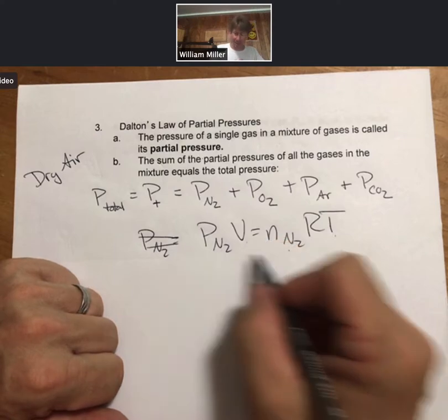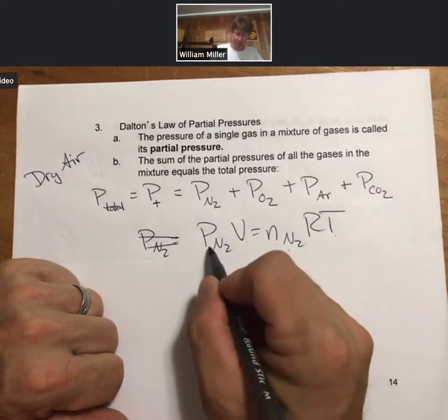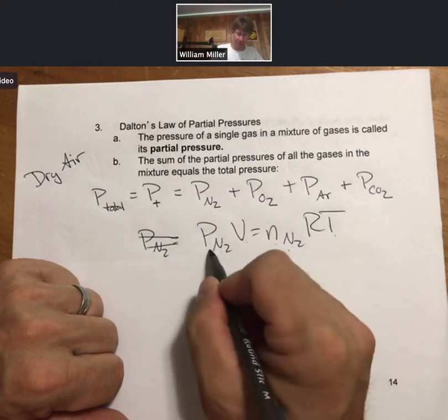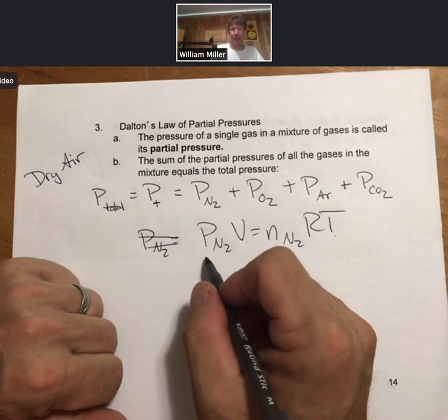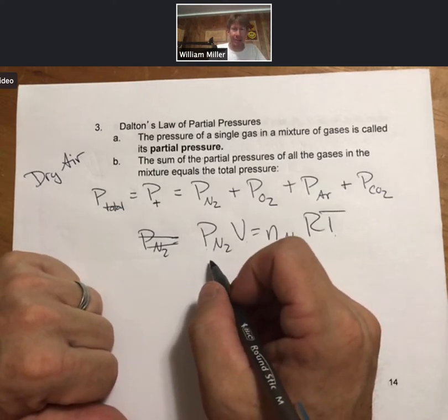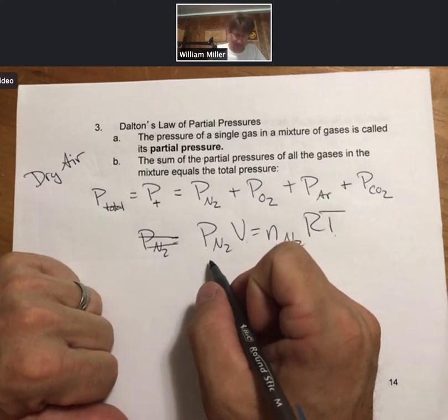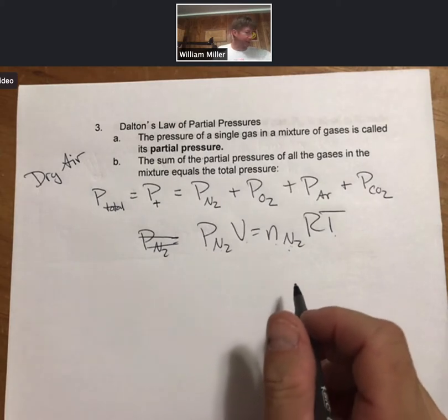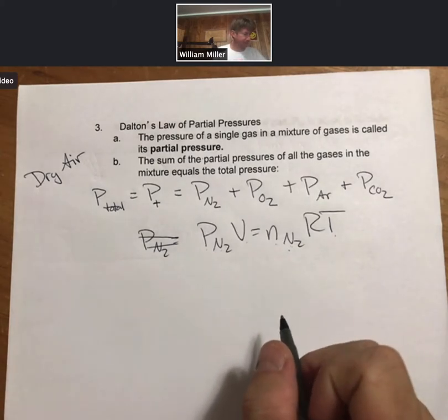And it doesn't matter which gas. If you have one mole of nitrogen, it will make a certain pressure. One mole of oxygen will make the same amount of pressure because the gases act the same. They are ideal. They have nothing specific about them.